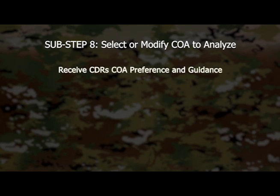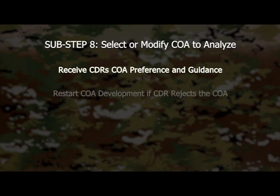Sub-step 8: select or modify COA for continued analysis. At this point the commander will select COAs and provide guidance for continued analysis, those they want further refined, and for preparation of a COA analysis action of MDMP. If the commander rejects the provided COAs, the staff restarts step 3 from the beginning.